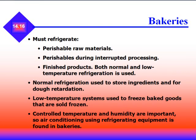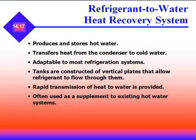Bakeries must refrigerate all perishable raw materials, perishables during interrupted processing, and finished products. Both normal and low temperature refrigeration are used. Normal refrigeration stores ingredients and is used for dough retardation; low temperature systems freeze baked goods sold frozen. Controlled temperature and humidity is important, so air conditioning using refrigeration equipment is found in bakeries. Heat recovery is also accomplished by refrigerant-to-water systems, which produce and store hot water, transfer heat from the condenser to cold water, and are adaptable to most refrigerant systems.